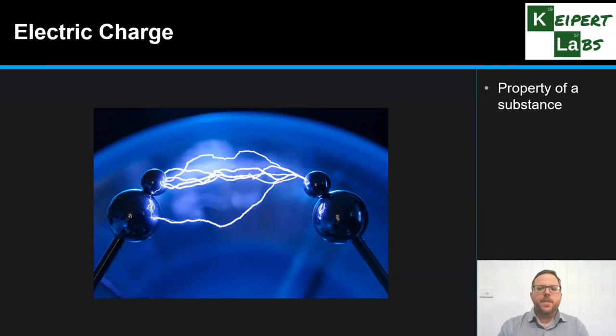Essentially, we say that electric charge is a property of a substance or an object. We might be thinking of something that's a big thing that you can see or touch or hold in your hands, or even down to the level of particles smaller than an atom. This is still something that can apply.